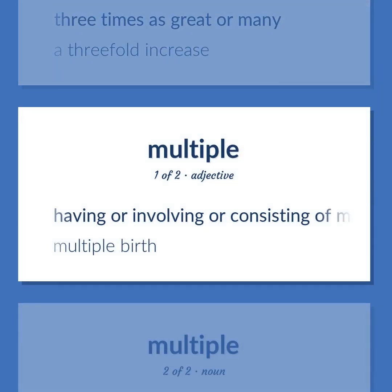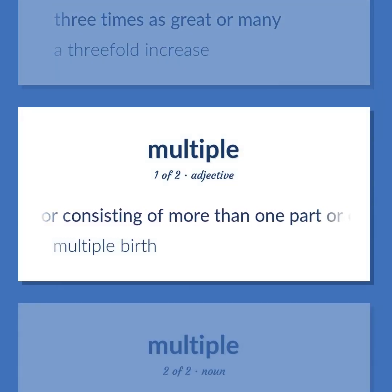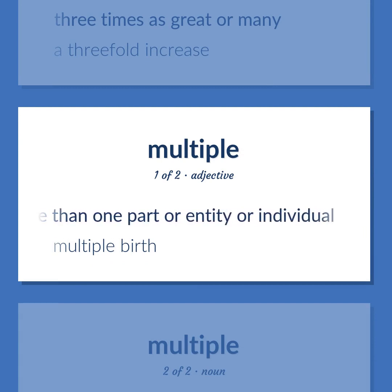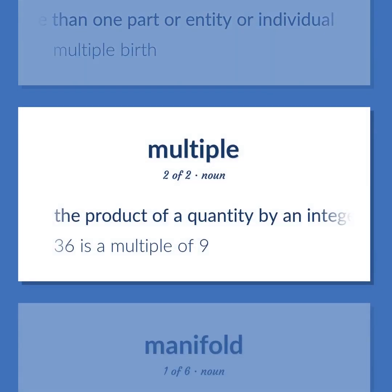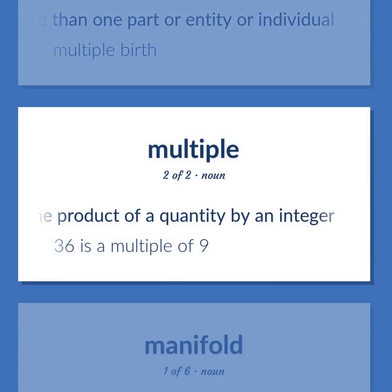Multiple: Having or involving or consisting of more than one part or entity or individual. Example: Multiple birth. The product of a quantity by an integer. Example: Thirty-six is a multiple of nine.